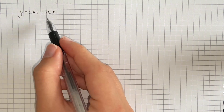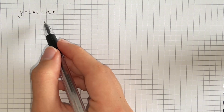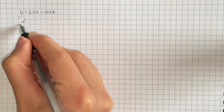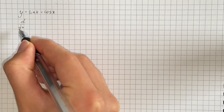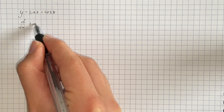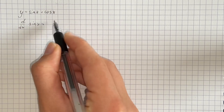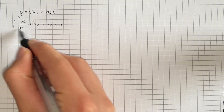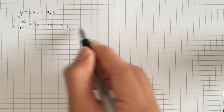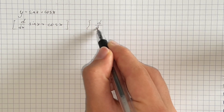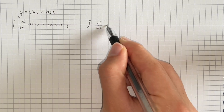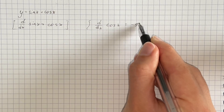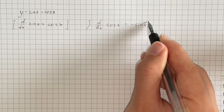We have to find the derivative of the given function. Here we're going to use the rule that the derivative of sine of x equals cosine of x, and the derivative of cosine of x is negative sine of x.